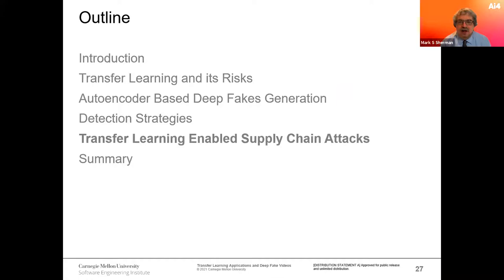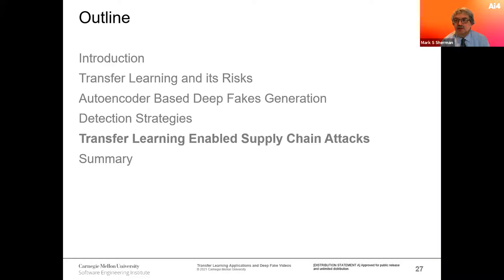How might things go wrong? Because of transfer learning, bad artifacts introduced into the teacher network can persist in the student. The autoencoder is a way to build those artifacts and insert them. The vehicle for insertion is the software supply chain — the way these systems are assembled. Most software, especially machine learning systems, is assembled rather than built from scratch. There are large numbers of ML frameworks and data sources, with no real way to understand provenance — no way to know where the teacher really came from or how it was manipulated before it reached you.